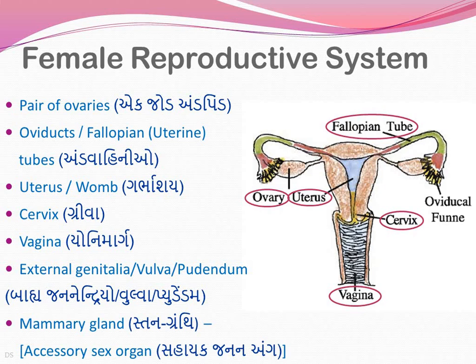Finally, the mammary gland is also a part of the reproductive system. While it does not directly support reproduction, it is important for feeding the child - the lactation process. It plays an important role as an accessory sex organ. Mammary glands are characteristic of mammals - that is why we are referred to as mammals. They are well-developed in the case of females, and that development occurs under the influence of estrogen, as well as progesterone, but the major hormone is estrogen.